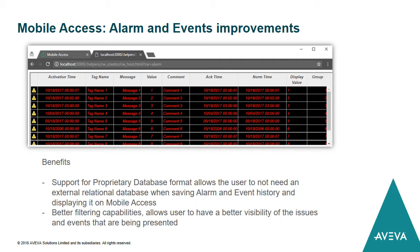On our mobile access solution, as we keep improving it, we have improved our alarm and events object. We added several filters that were present on the local viewer but not on mobile access, we added support for proprietary databases when doing history formats, and we also added font color. So a lot of improvements were implemented on this version for the alarm and events object on mobile access.